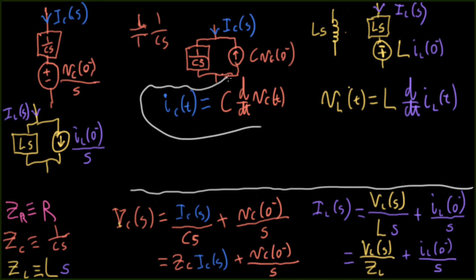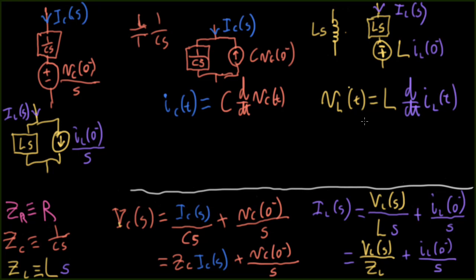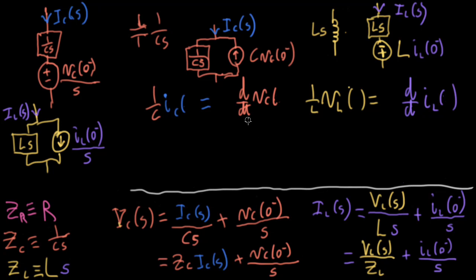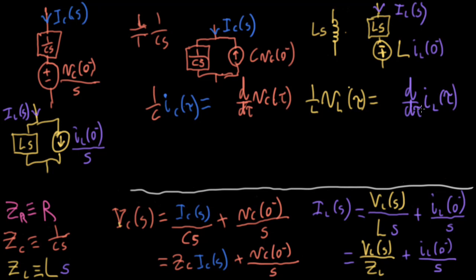Let's go back to the time domain for a second and take both sides of these expressions and integrate them. Let's tweak this by dividing both sides of the inductor expression by L, and similarly dividing both sides of the capacitor expression by C. Now, to avoid confusion with time variables, let me replace the T's inside the integrals with Tau's — same mathematical thing, but I'm going to want to introduce some new T's. So Tau for everybody.